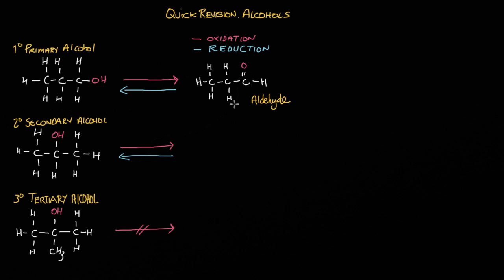Oxidation is the loss of electrons, and oxidation can also be the loss of hydrogen. The molecular formula for this primary alcohol is C3H8O, whereas the molecular formula for this aldehyde is C3H6O. So we've lost two hydrogens, which makes it an oxidation reaction.